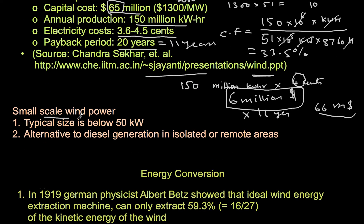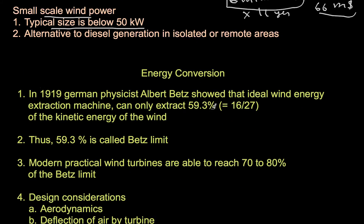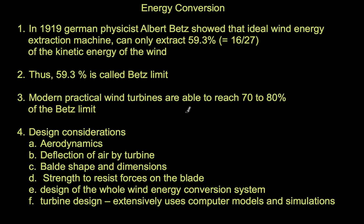Small-scale wind power typically involves sizes below 50 kilowatts, often used as an alternative to diesel generation in remote areas. Now let's look at the concept of energy conversion. The kinetic energy of wind is converted to mechanical energy in the turbine.